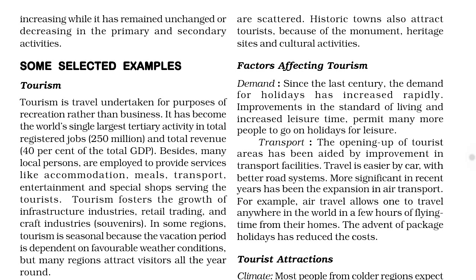Where there are fewer transport facilities, there are more adventurous tours. Adventurous tours attract fewer people; for example, older people generally don't prefer adventurous tours — they prefer good places where transport is available. The opening of tourist areas has been aided by improvement in transport facilities. So the two factors affecting tourism are demand and transport.